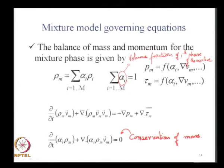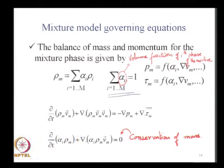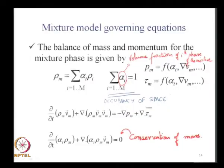The first constraint is that the sum of all volume fractions must equal 1. This is essentially the occupancy of space — in a continuum formulation there is no such thing as emptiness. All space is occupied by either air or the drop phase. In the two-phase case, m equals 2, so we define alpha_1 and alpha_2, and alpha_1 plus alpha_2 must equal 1.